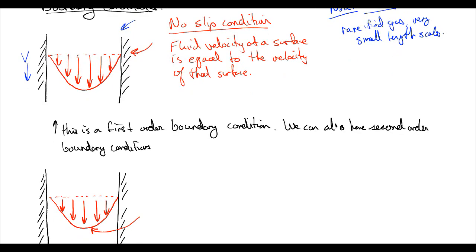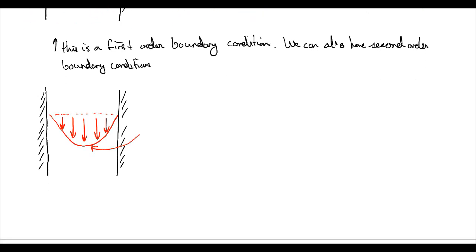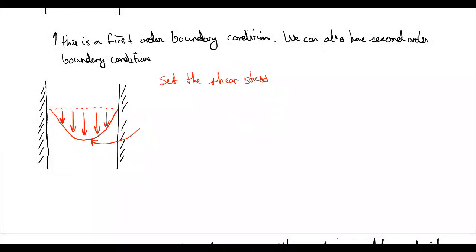So this is a first-order boundary condition. We can also apply second-order boundary conditions. So a second-order boundary condition means we know where we set the shear stress in a system. So in this case, we know here because our velocity gradient at this point here right in the middle, the velocity gradient is equal to zero here. So the gradient in the velocity is equal to zero. Therefore, the shear stress is equal to zero. So most often, this is what we'll do. We'll set the shear stress equal to zero at a point when we have symmetry, for example, due to symmetry.